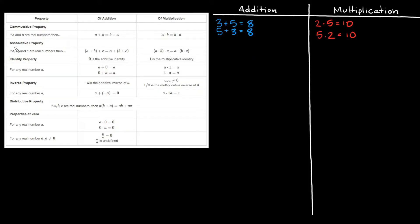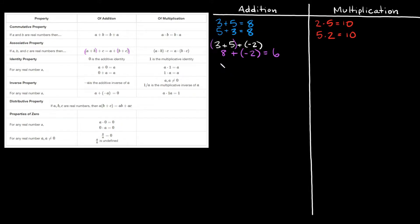That's the commutative property. Now let's move on to the associative property. The formula is: A plus B in parentheses plus C is equal to A plus, then B plus C in parentheses. It's just saying that if all you're doing is adding numbers together, you can move the parentheses around and you'll still get the same answer — this works with positive or negative numbers. For example, 3 plus 5 plus negative 2 with parentheses around 3 and 5: that simplifies to 8 plus negative 2, which equals positive 6.